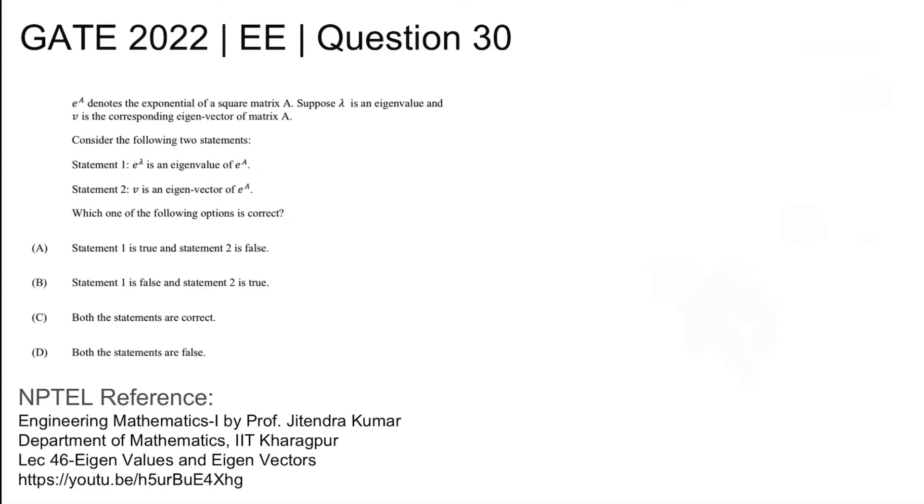This is Gate 2022 electrical question number 30. E to the power A denotes the exponential of a square matrix A. Suppose lambda is an eigenvalue and V is the corresponding eigenvector of matrix A.